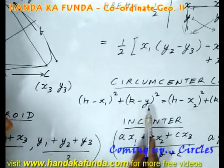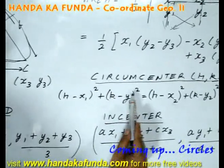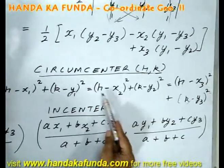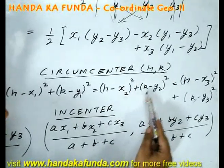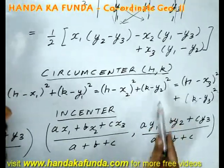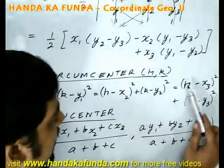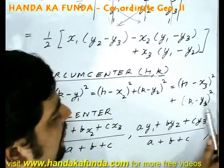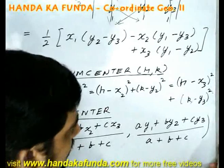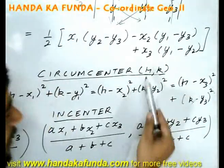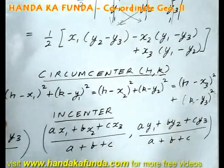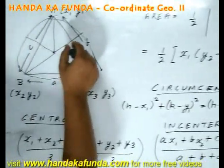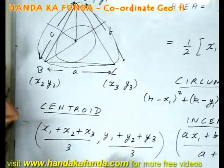The equation is: h minus x1 whole square plus k minus y1 whole square equals h minus x2 whole square plus k minus y2 whole square, which equals h minus x3 whole square plus k minus y3 whole square. Solving these equations, I can get the value of h, k. The in-center, or the point from which you can draw a circle inside the triangle, can be determined by the formula ax1 plus bx2 plus cx3 divided by a plus b plus c.